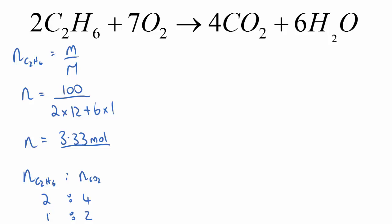Now we don't have one mole of ethane, we have 3.3. So our moles of carbon dioxide is going to be twice that of our moles of ethane. So it's going to be two lots of 3.33, so 6.66 moles.